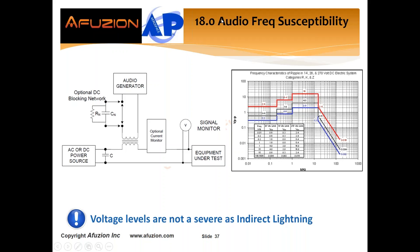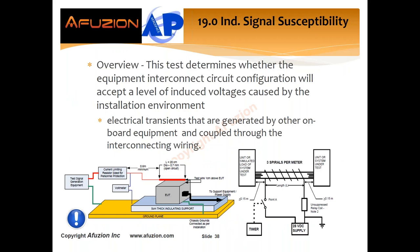Section 19 — induced signal susceptibility — is meant to simulate lines that are closely run together, like those long cable runs in aircraft where you have different equipment routed right next to each other. This looks at induced voltages, currents, and transients generated from one line to another. Testing houses that specialize in DO160 will let you know that hardly anybody fails these tests — they're pretty benign compared to section 20 RF susceptibility.